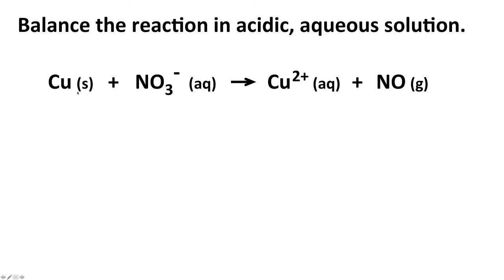Going from left to right: copper, the element, has no charge, so its oxidation number is zero. In the nitrate ion, oxygen has an oxidation number of minus two; with three oxygens, that's a total of negative six. Nitrogen must have an oxidation number that, when added to negative six, equals the overall charge of minus one — so nitrogen is plus five, because plus five plus negative six equals negative one.